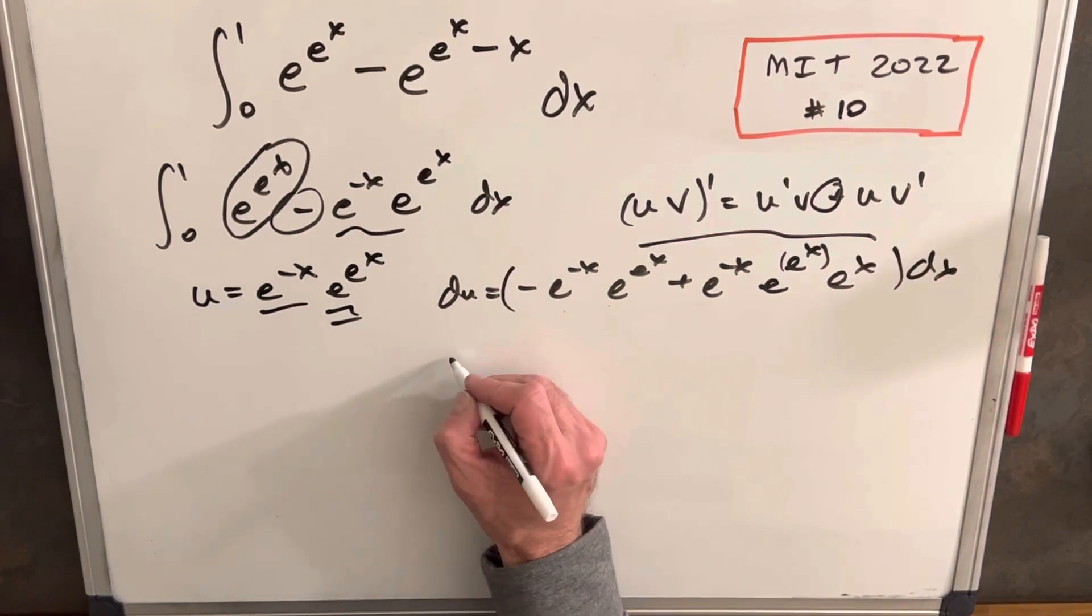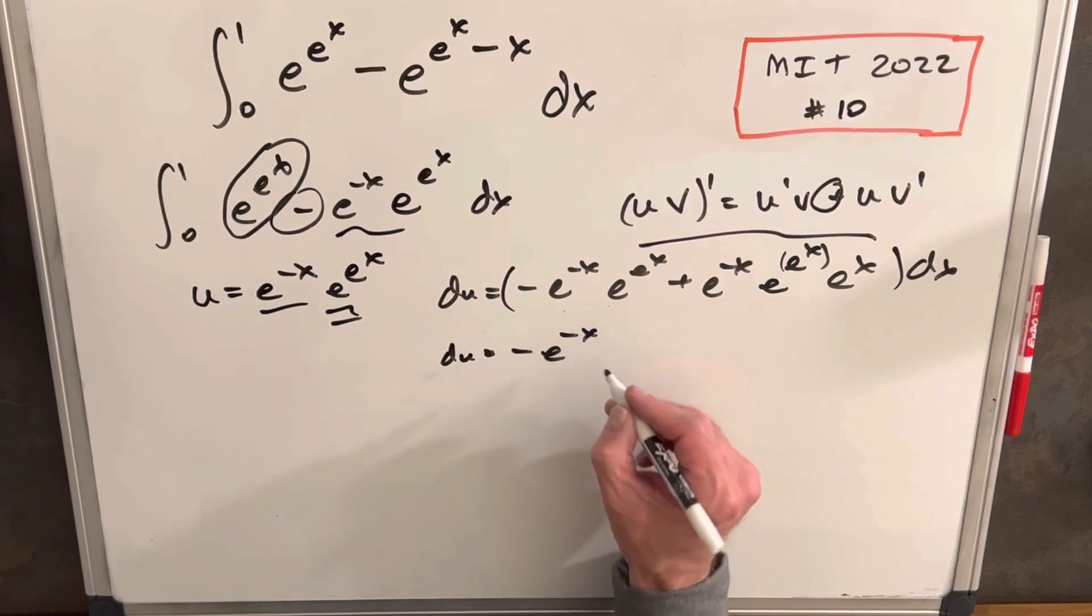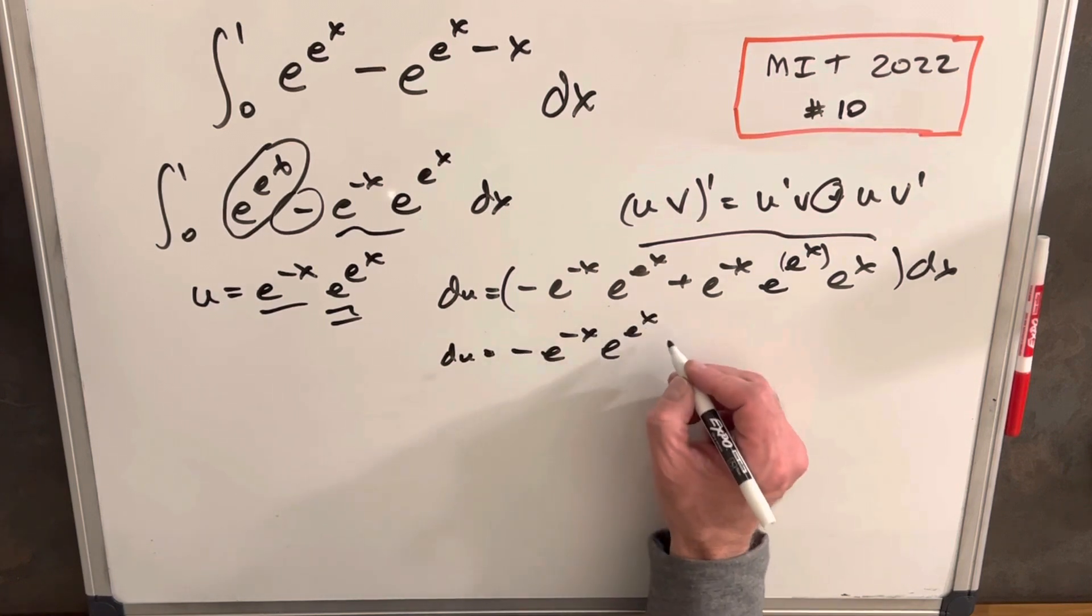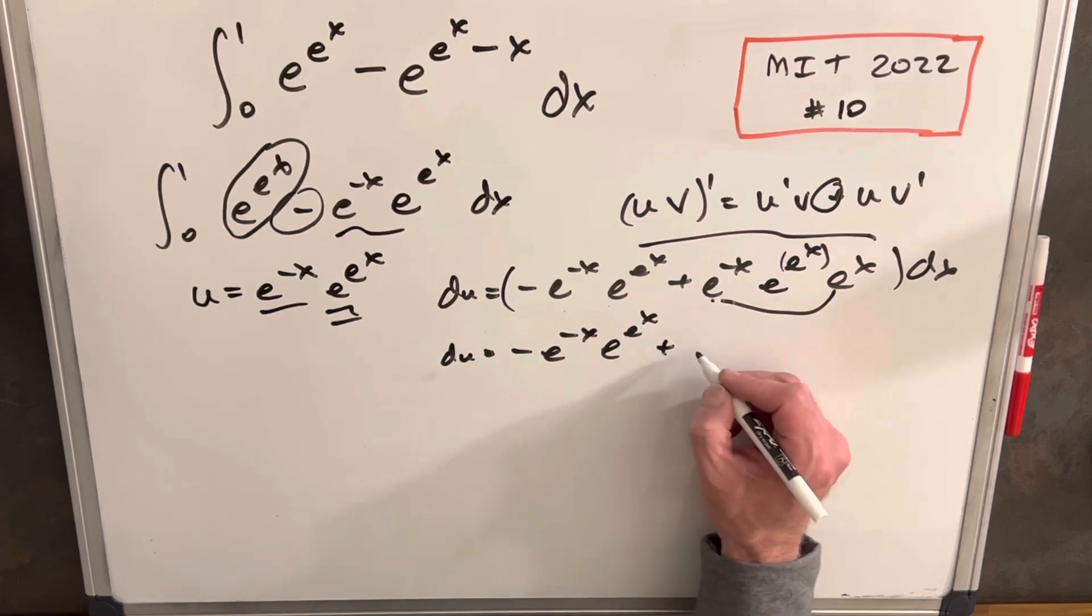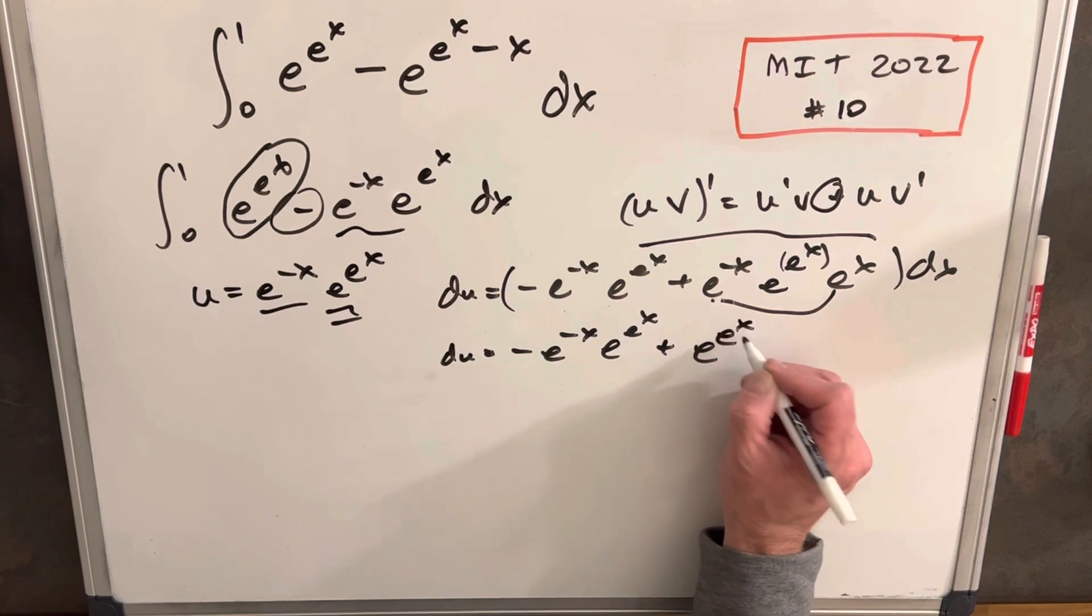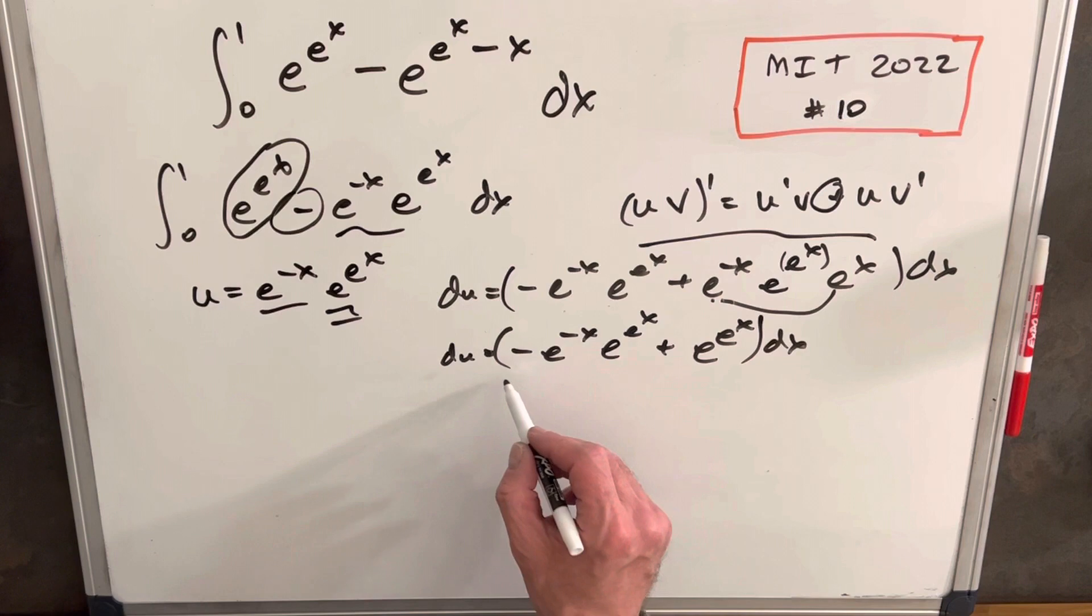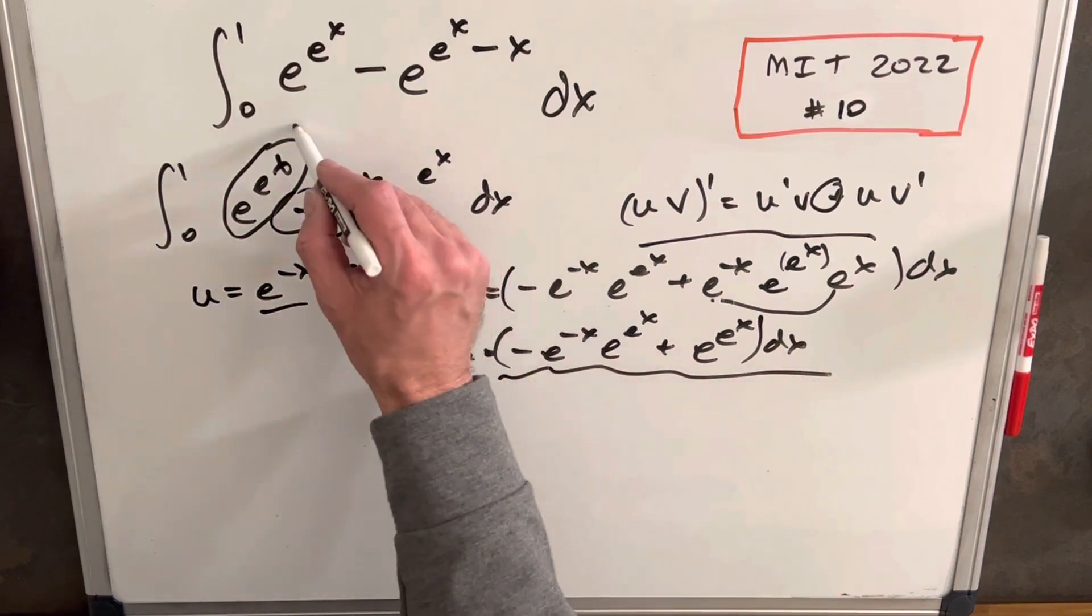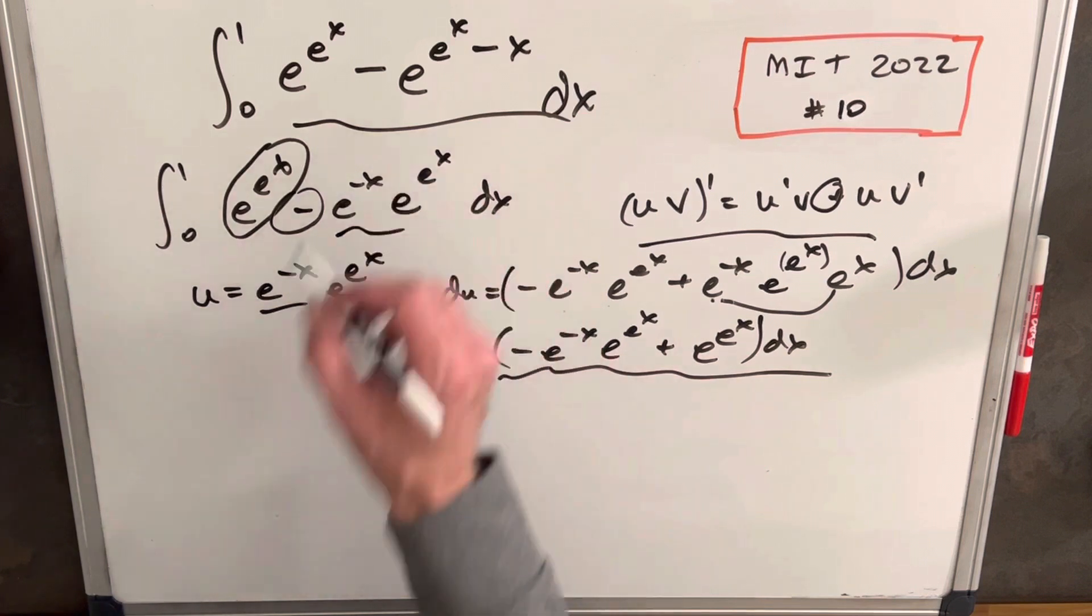Let's simplify this. We have -e^(-x) · e^(e^x). Now, the key here: e^x times e^(-x) is just 1. So we have e^(e^x). The key takeaway is this whole thing is actually just our integral. It could be in a different order, but if you flip the order, it's the same.